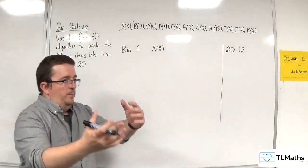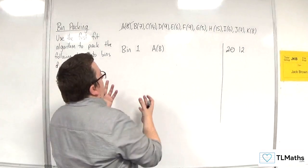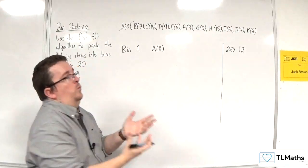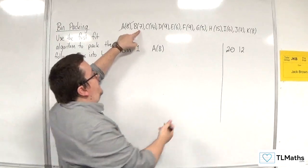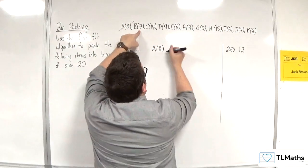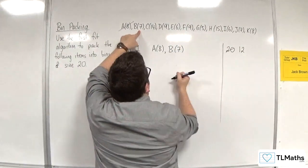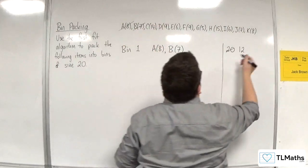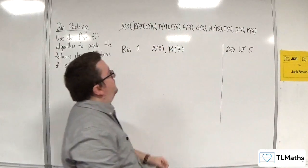B is coming along next. Can I fit it into bin one? Yes, I can. B is of size seven, there is 12 available, and so B is going into bin one. I would now have five left over.